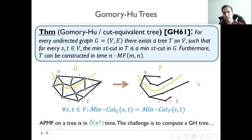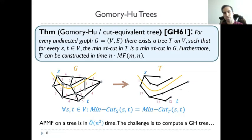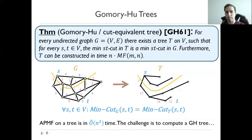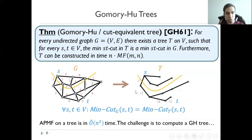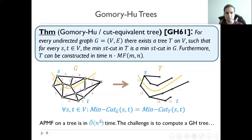The Gomory-Hu algorithm from 1961 shows that for every undirected graph G, there exists a tree T on the same set of nodes such that for every pair of nodes S and T, the minimum ST cut in the tree is also a minimum ST cut in the graph. This tree can be constructed in n applications of maximum flow. To find the minimum cut in the tree for a given pair S and T, we simply find the lightest edge in the path between them. Given the tree, all values can be found in n-squared time, so the challenge is to compute the Gomory-Hu tree fast.